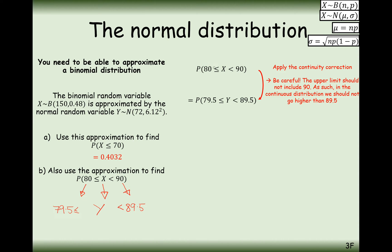Since we're including 80, the decimal can go down to 79.5. We're not including 90, so we only include up to 89 successes, and that rounds up to 89.5. On the calculator: lower limit 79.5, upper limit 89.5, mean 72, standard deviation 6.12. The answer is 0.1081.